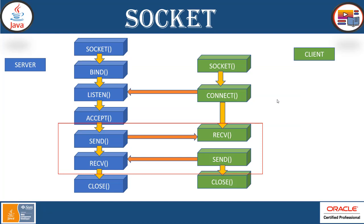Socket provides a communication mechanism between two computers using Transport Control Protocol, that's called TCP. A client program creates a socket on its end of the communication and attempts to connect that socket to the server. As you can see, the blue color is for the server and the green color is for the client. When the connection is made, the server creates a socket object on its end of the communication.